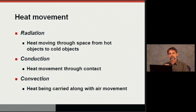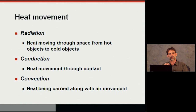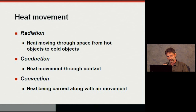We'll move into the fundamentals of heat movement: radiation, conduction, and convection. Radiation is heat moving through space from hot objects to cold — regardless of wind, radiation takes a straight path from one object to another. You may see radiant heaters in large warehouses or grocery store entryways where there's a breeze going by, but you feel warm because they use radiant heat effectively. Conduction is heat movement through contact, and we use insulation as a means to reduce conduction heat loss. Insulation is one way of controlling heat transfer through conduction.